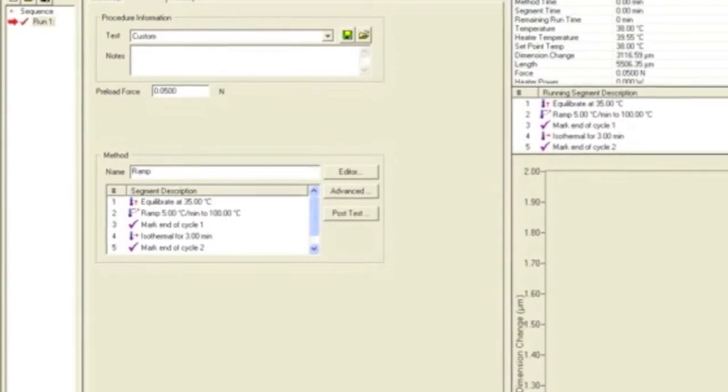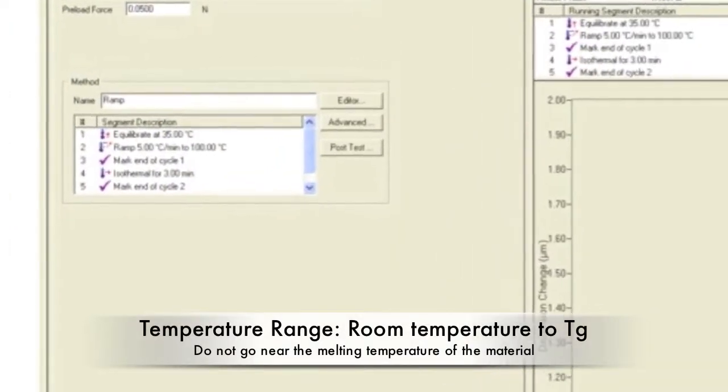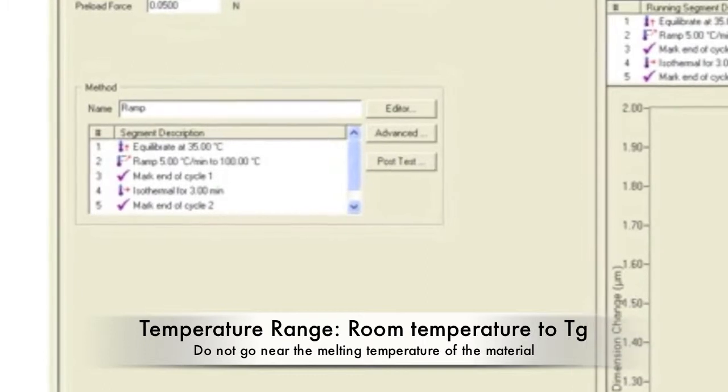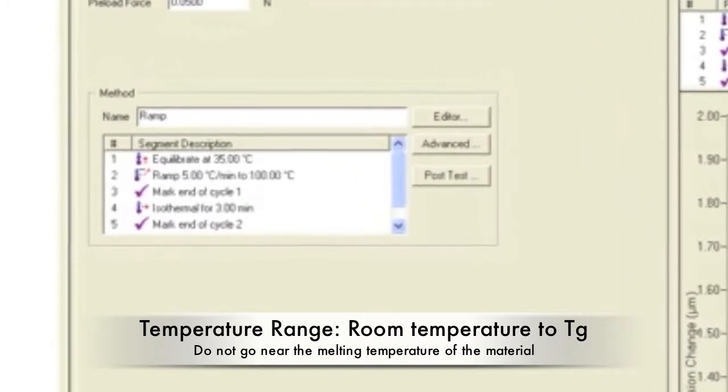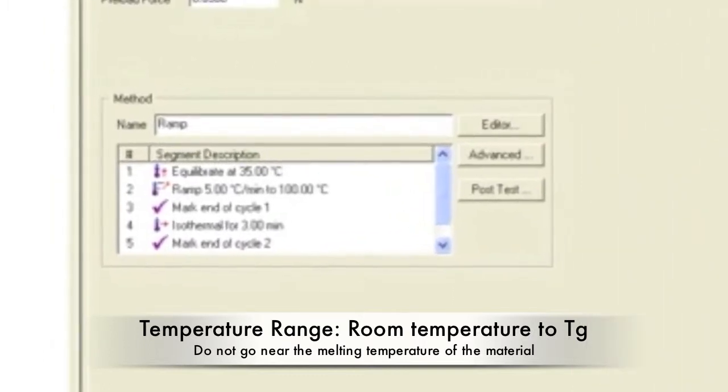To measure the coefficient of thermal expansion, ramp from room temperature to above the TG. Typical heating rates for the ramp step is 5k per minute. Do not go near or above the melting temperature of the material.